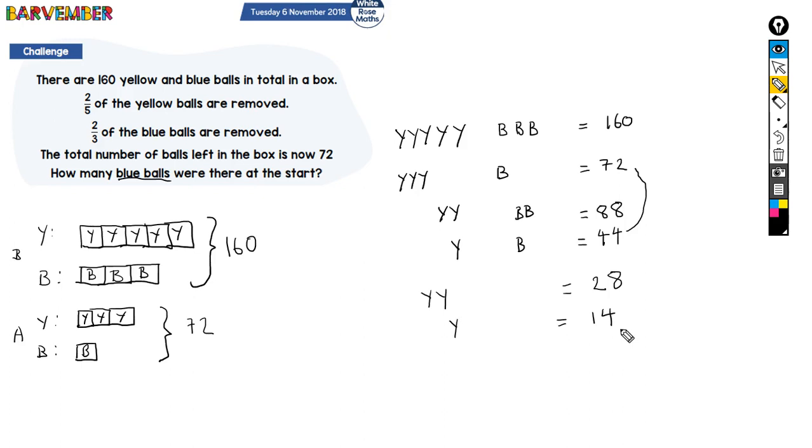So now what was I asked? I was asked how many blue balls there were at the start, so I still need to work out what a blue ball is. If a Y and a B is 44, and a Y is 14, then B must be 30. And we're asked how many blue balls there were at the start. Well, I now know that each of these is 30, so the total is 90.